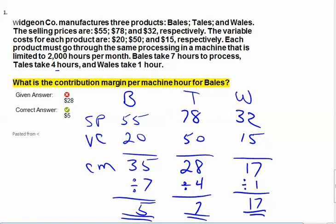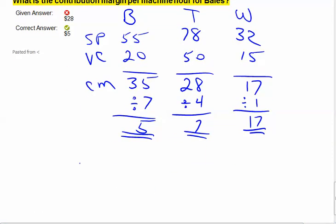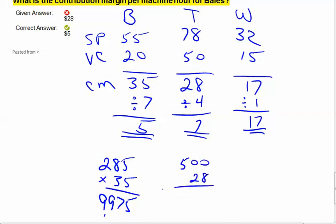So 285 bales times $35 would be my total possible contribution margin. Let's expand that. If I take 285 times $35, my maximum profit, if that's all I did, would be $9,975. For tails, which takes four hours, $2,000 divided by four is 500. So I could do 500 possible tails at $28, and my maximum contribution margin would be $14,000.